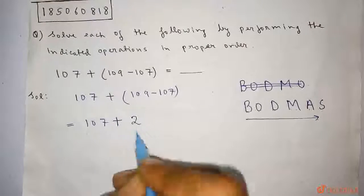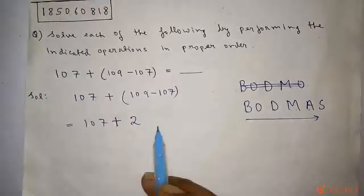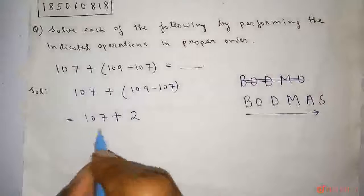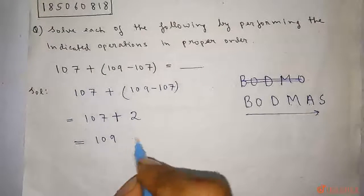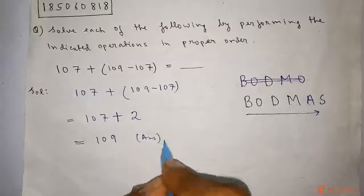Now we are going to operate the addition, that is 107 plus 2, which comes out to be 109. So 109 is the correct answer to this question.